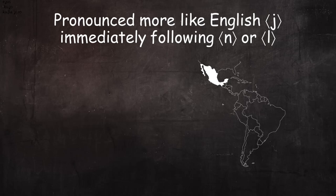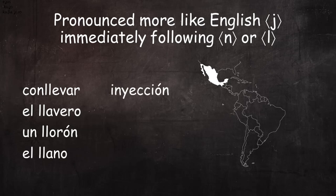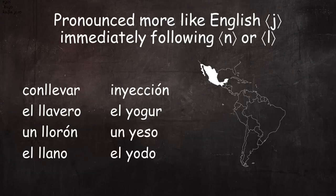To an American ear, in this position it sounds a bit like English J. Listen to these examples: conllevar, el llavero, un llorón, el llano, inyección, el yogur, un yeso, el yodo.